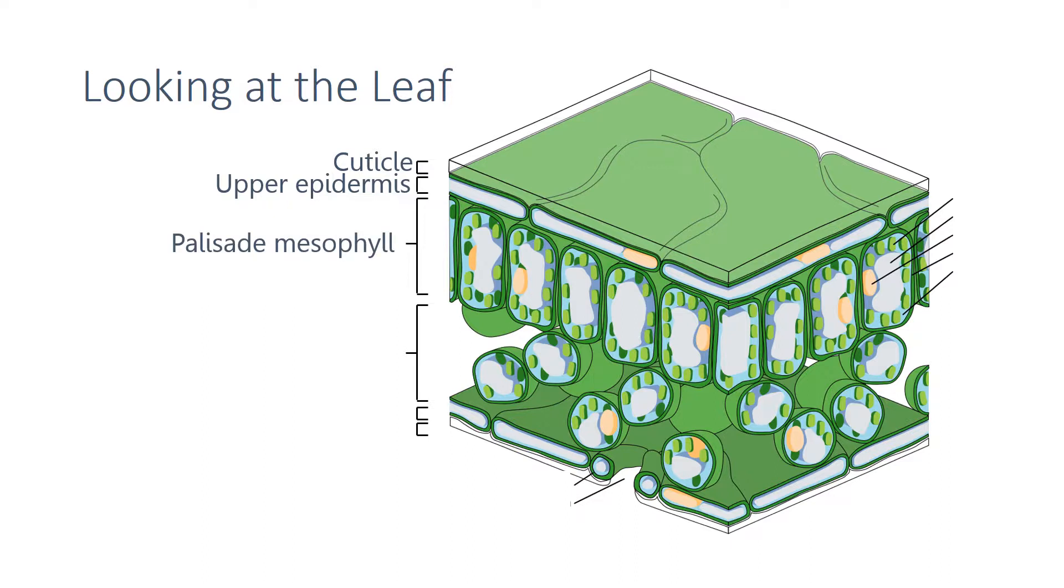Under this you'll find the palisade mesophyll. You can see here that the cells that make up this area are packed full of chloroplasts which carry out photosynthesis.